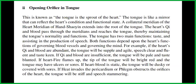Both functions depend upon the heart's functions of governing blood vessels and governing the mind. If the heart's Qi and blood are abundant, the tongue will be supple and agile, speech clear and fluent, and taste keen. If Qi and blood are insufficient, the tongue will be pale and taste blunted. If the heart fire flames up, the tip of the tongue will be bright red and the tongue may have ulcers or sores. If the heart blood is static, the tongue will be dusky or covered with sores. If heat invades the pericardium or phlegm obstructs the heart, the tongue will be stiff and speech stammering.